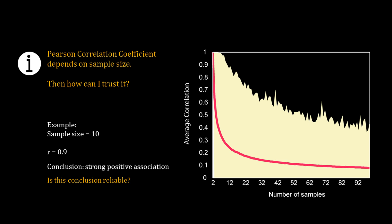This result from random simulation is very troublesome. Suppose I have real experiment data with sample size equal to 10 and the calculated Pearson correlation coefficient is 0.9. How can I conclude a strong linear relationship between the variables? In this simulation using random numbers, I got correlation for sample size 10 as high as 0.92. That means I cannot be sure of a linear association just from the value of r.